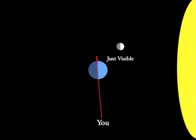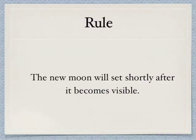Let's look at our diagram again and see if we can infer another rule. The moon here is just visible. As the earth turns and you go further into the night, the moon will disappear because the angle from which you now observe the moon has changed, and the slightest sliver of the illuminated side of the moon will no longer be visible. And so from this we infer another rule: the new moon will set shortly after it becomes visible. You normally only have a short amount of time to see the new moon after the sun has set.